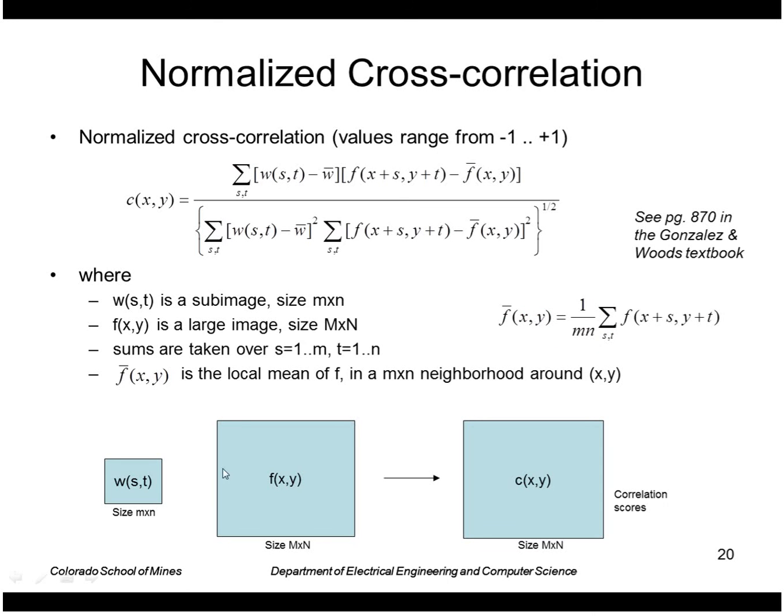Pictorially we take a small mask, correlate it with a large image, and we get that equivalent same sized image of correlation scores. And we look for a peak in that.